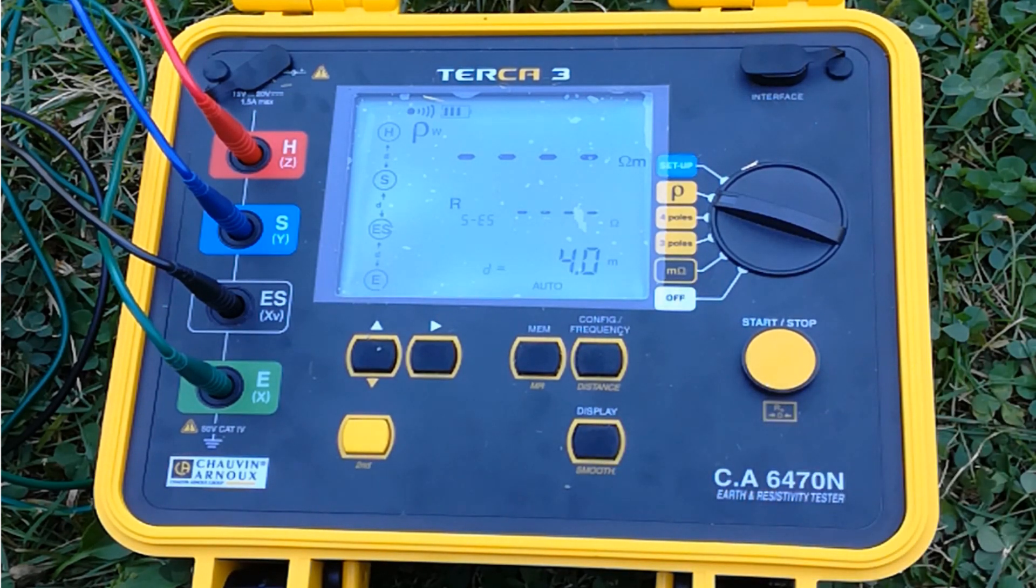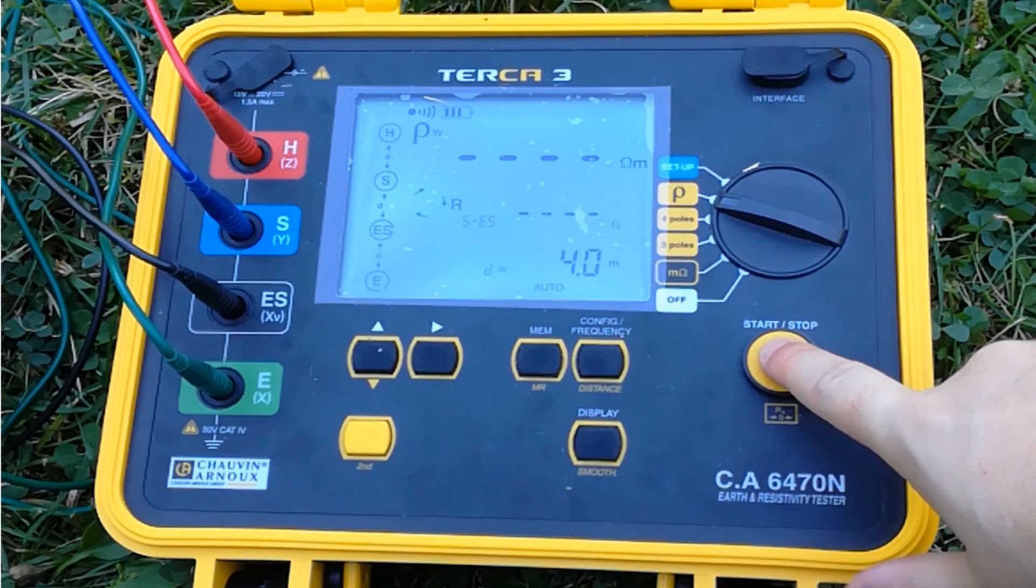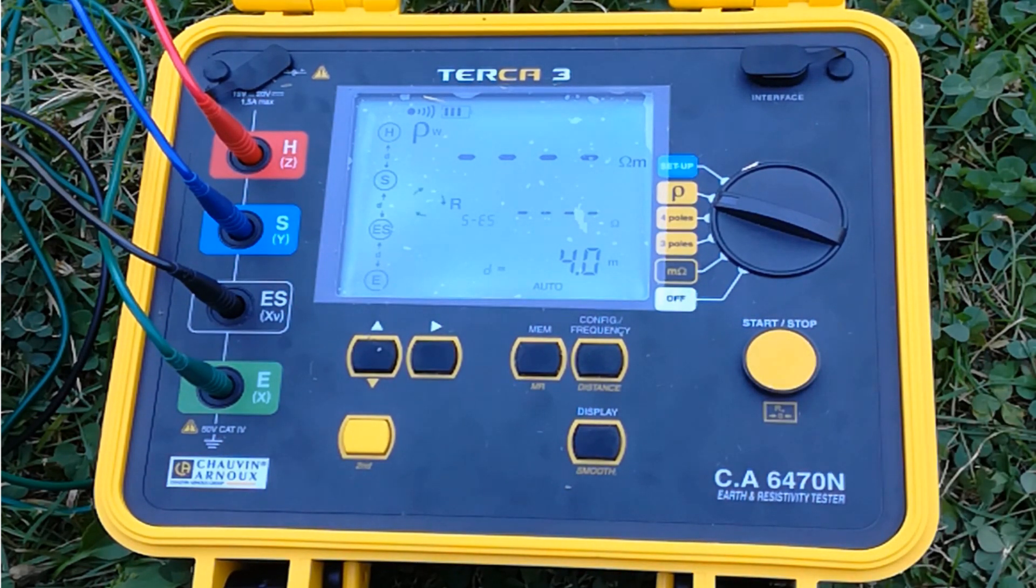Now, we are ready to take a soil resistivity measurement. Push the start button and hold it for at least 2 seconds. After a few moments, the resistivity reading appears on the screen, in ohms meters.